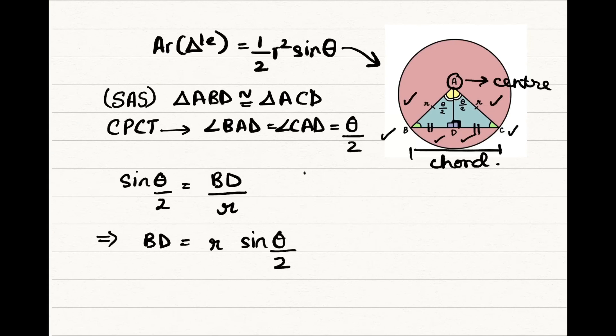Also, cos theta by 2 is equal to adjacent by hypotenuse that is AD by r. So AD is equal to r cos theta by 2.